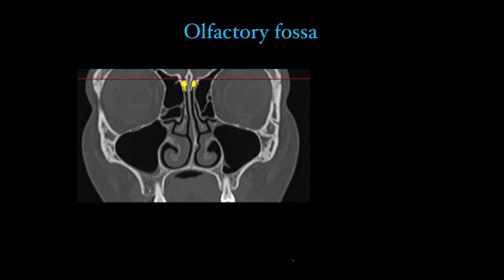The olfactory fossa contains the olfactory bulb and rootlets — that is the major and only content.